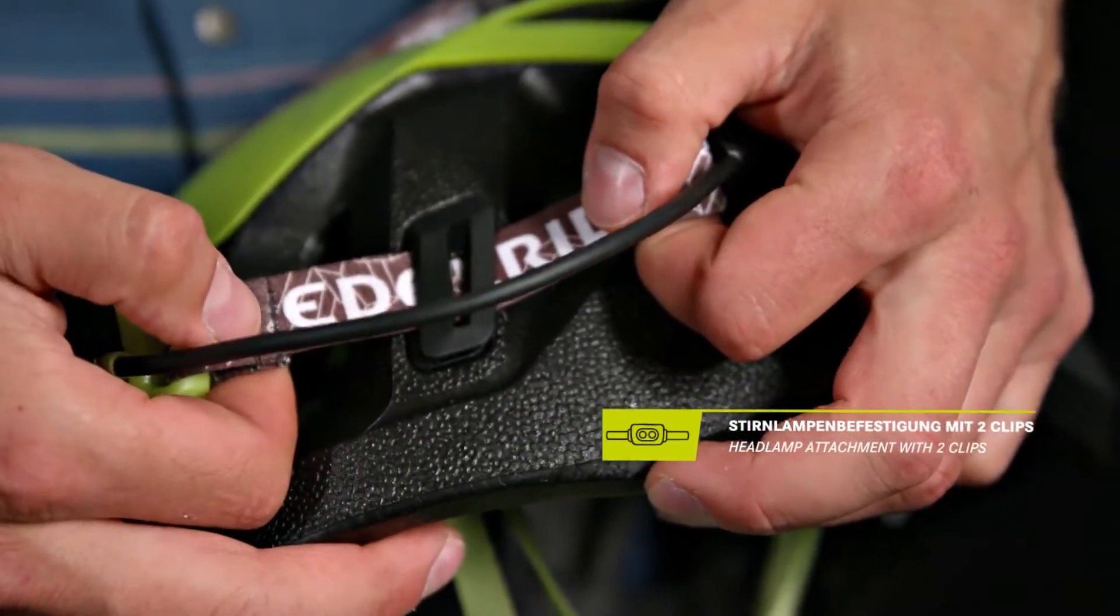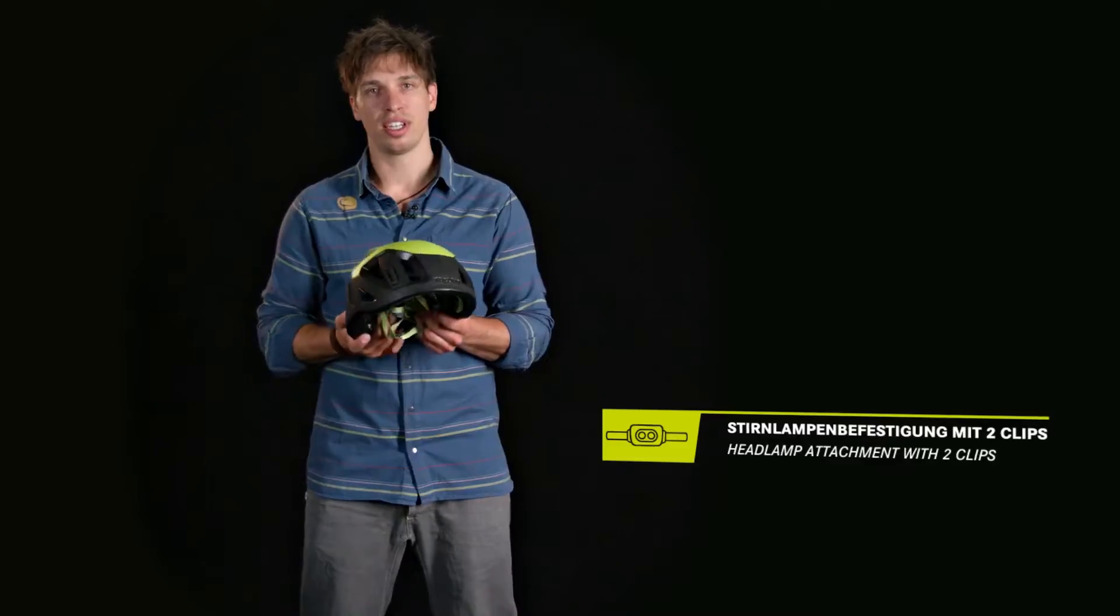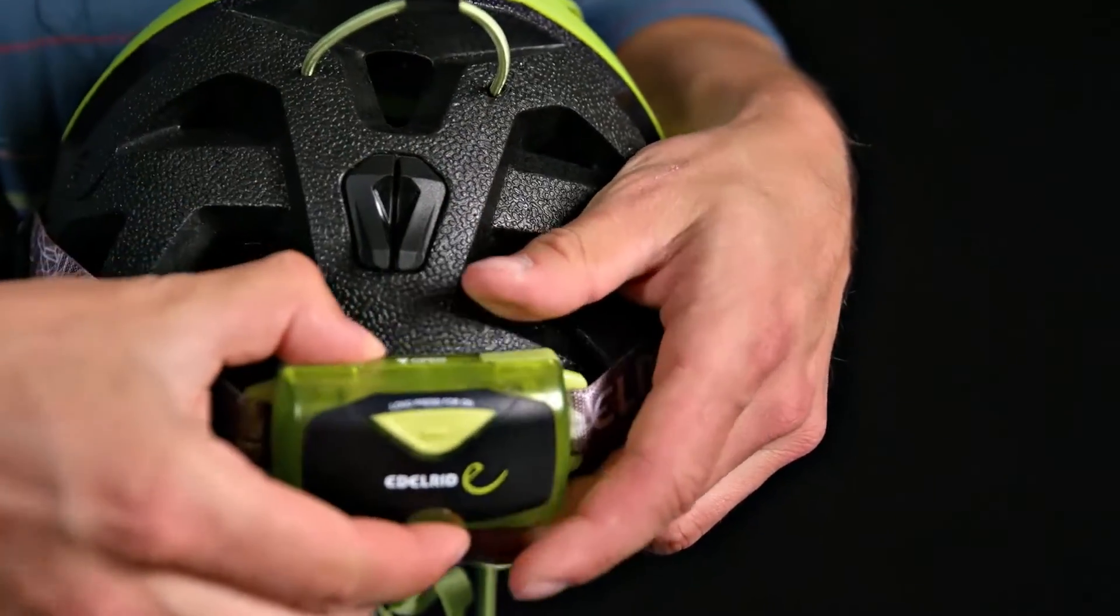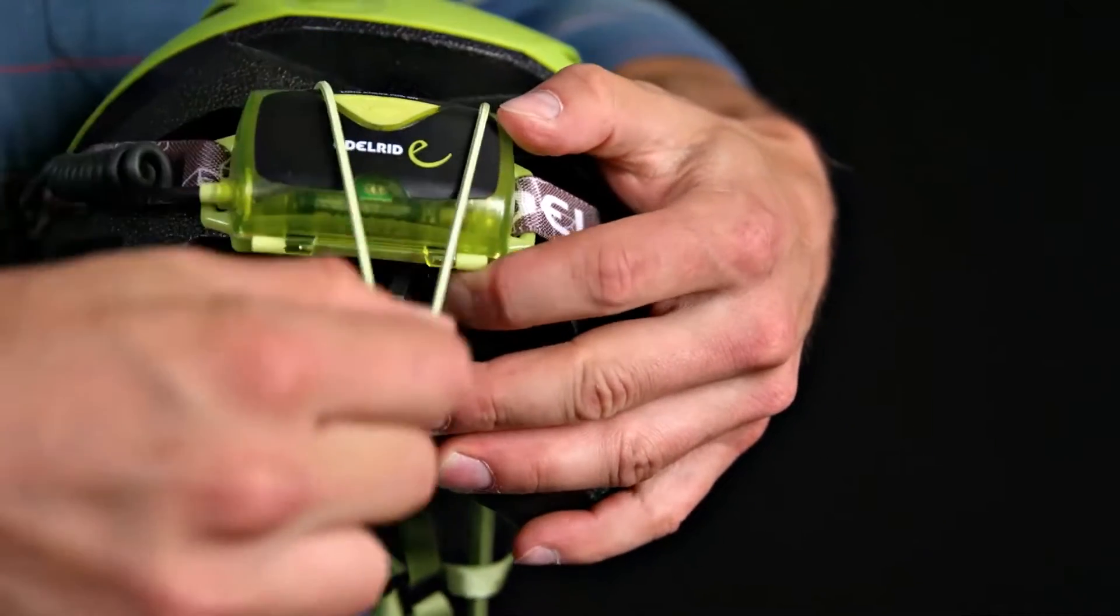Besides, the helmet is equipped with two headlamp clips on the front and a more flexible attachment at the back, which allows you to attach even headlamps with battery packs or skiing goggles.